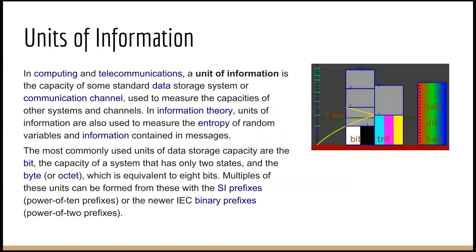Units of information. In computing and telecommunications, a unit of information is the capacity of some standard data storage system or communication channel used to measure the capacities of other systems and channels. In information theory, units of information are also used to measure the entropy of random variables and information contained in messages. The most commonly used units of data storage capacity are the bit — the capacity of a system that has only two states — and the byte or octet, which is equivalent to 8 bits. Multiples of these units can be formed with SI prefixes (power of 10) or the newer IEC binary prefixes (power of 2).